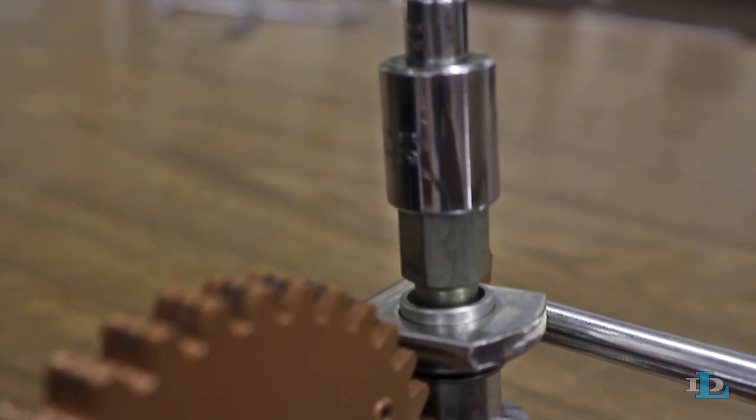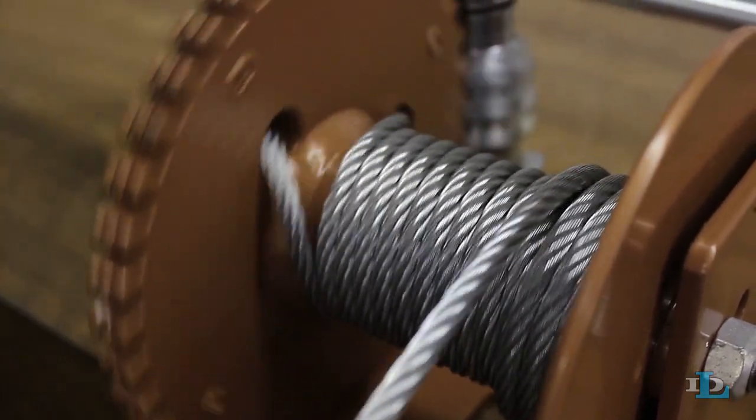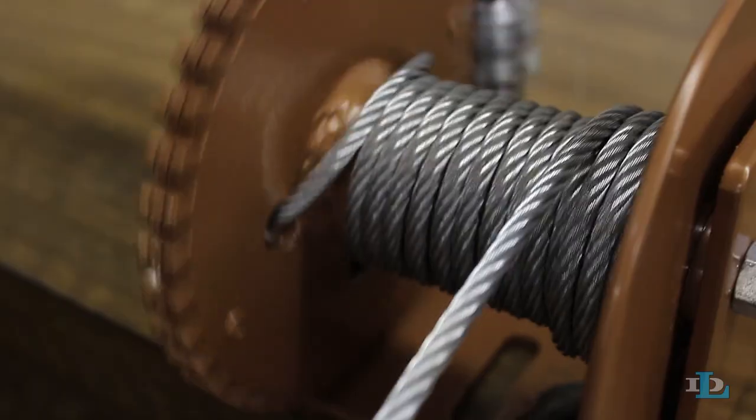Simply attach the socket to the hex shaft and power the drill at low or moderate speed to significantly increase the operating speed of your winch.